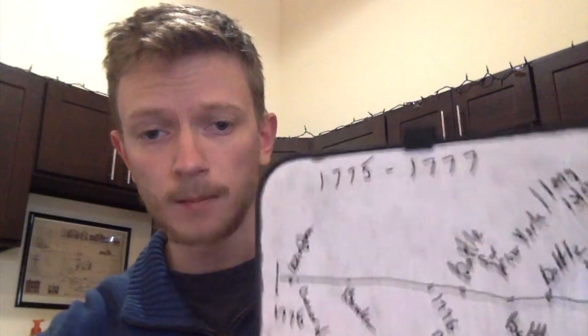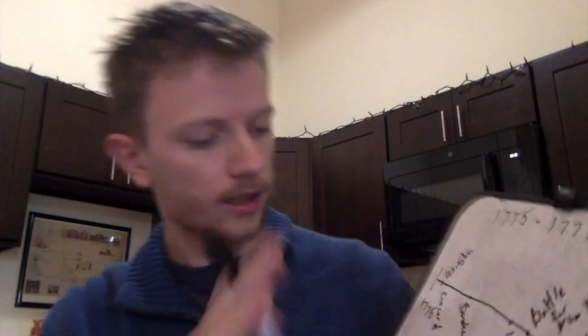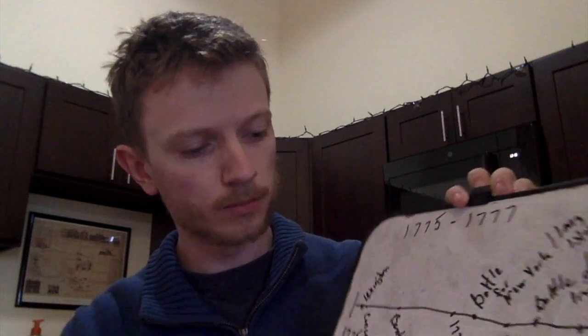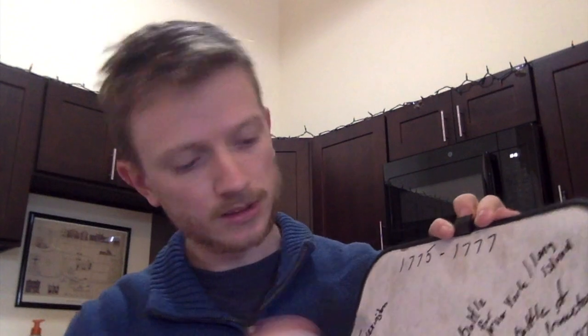The timeline is starting to look a lot more full. We've filled in some more battles: the Battle of New York slash Brooklyn, the Battle of Trenton, the Battle of Saratoga, as well as Lexington and Concord. Now, as a group, as a class, I'm going to break you guys up into groups of two to four. Each group is going to get one of these events — one of these critical battles, excluding the Declaration of Independence because it wasn't a battle.